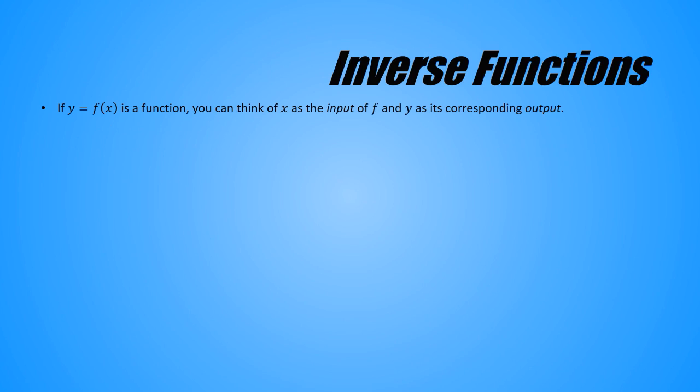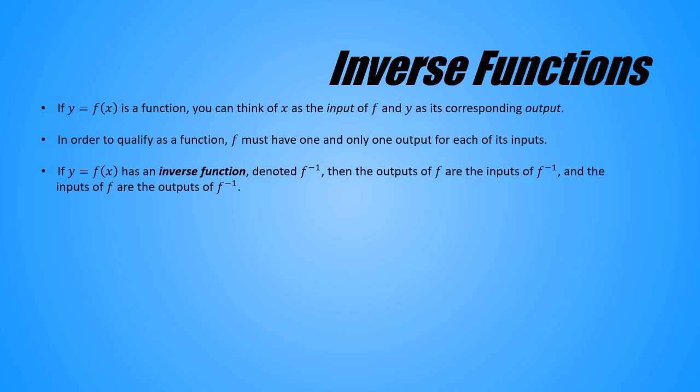If y equals f of x is a function, you can think of x as the input of f and y as its corresponding output. In order to qualify as a function, f must have one and only one output for each of its inputs. This will be important later. If y equals f of x has an inverse function, denoted f inverse, that's what this superscripted negative one means, that's not an exponent, this is read as f inverse, then the outputs of f are the inputs of f inverse, and the inputs of f are the outputs of f inverse.